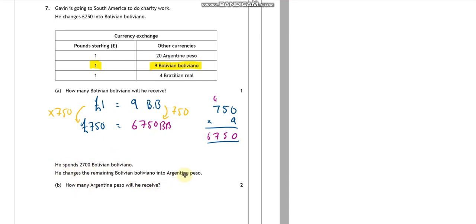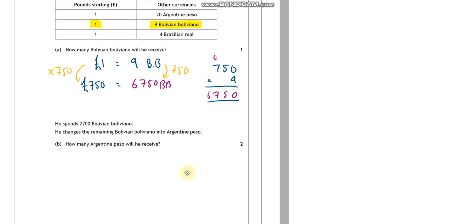Okay, he spends this amount and now he's going to change it into pesos. So what's he going to get back? So your first mark will be to say that he's got 6750 BBs, and he's just spent 2700 on. So it's a takeaway to be done there, isn't there? That's 5 take away 0 is 5. So he's got 4050 left over.